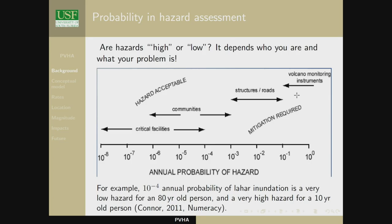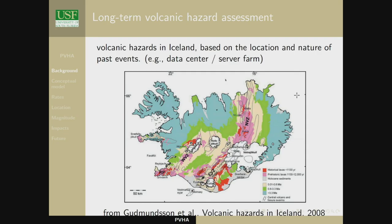If we think about examples of long-term hazard assessment, we can start with simple, relatively regional views. Here's an example of a volcanic hazard map based solely on map data — a uniformitarian view of regional hazards. The color scheme maps the ages of products at the surface. You can see that if you live in the eastern volcanic zone of Iceland, you're likely at a higher hazard rate than elsewhere.